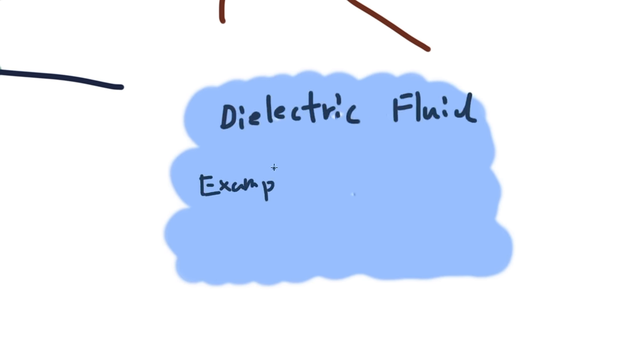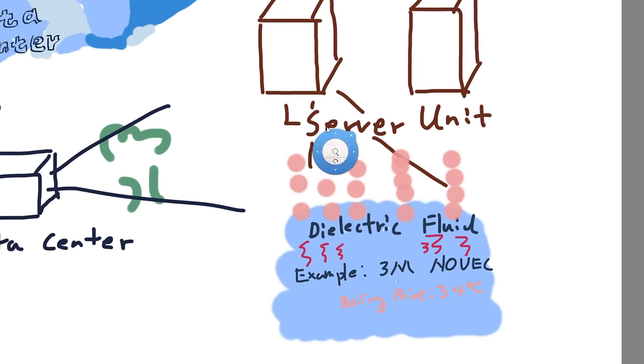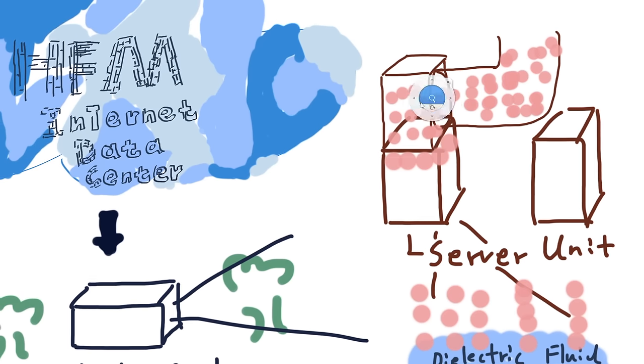Here we are going to use 3M Novec liquid as an example. This liquid has a boiling point of 34 degrees Celsius. When the motherboard heats up, this liquid will boil and start an aggressive vaporization process. During this process, the excessive heat from the motherboard will be taken out and the vaporized 3M Novec will be transferred to the other side of the cooling system.